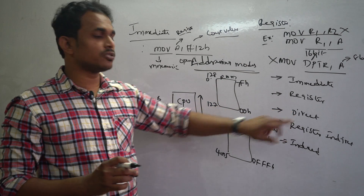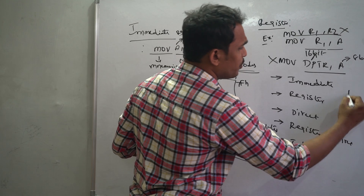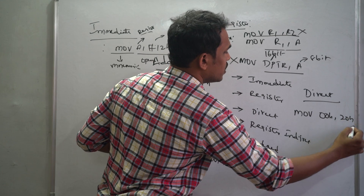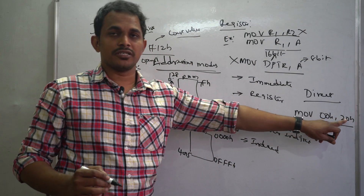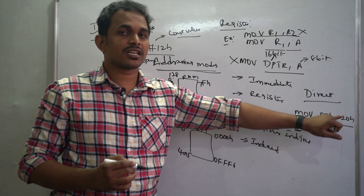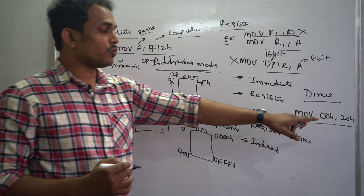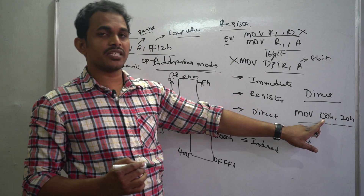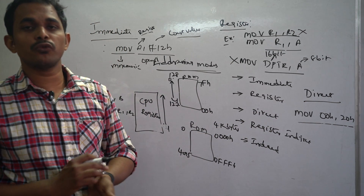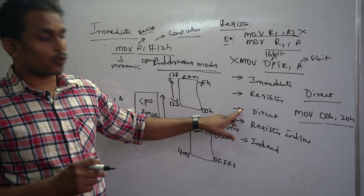Direct addressing mode is used to share data between RAM memory locations. For example, MOV 00H, 20H means the data from memory location 20H (source) is moved to memory location 00H (destination). Both operands are RAM address locations, so this is direct addressing mode.